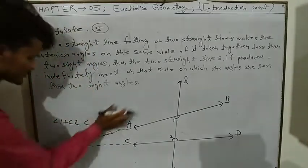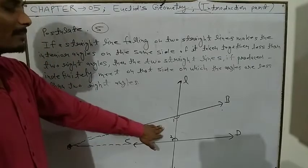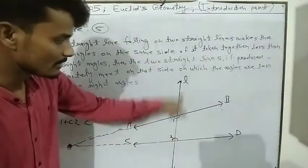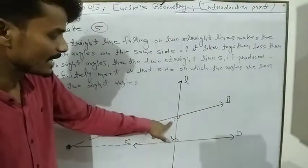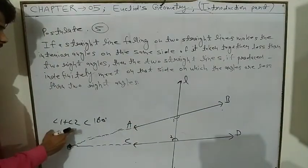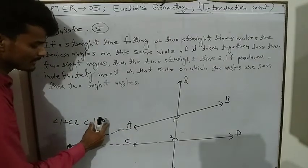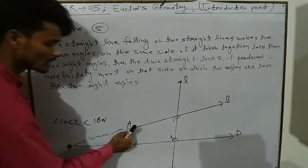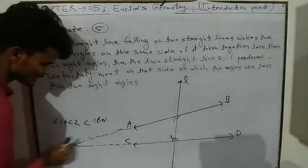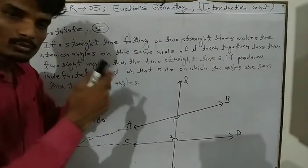We have to write this statement and draw this diagram. Make a straight line falling on two other straight lines. Show the interior angles on one side — angle 1 and angle 2 — and show the condition that angle 1 plus angle 2 is less than 180 degrees. Then increase these two straight lines and they will meet each other.